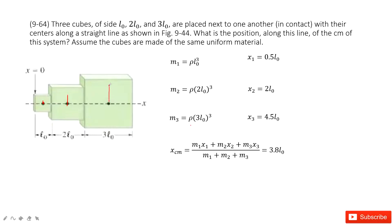This one is 2L0 plus 1.5L0, which becomes 4.5L0. So there is a position for each cube. We just consider the center of mass for each other.